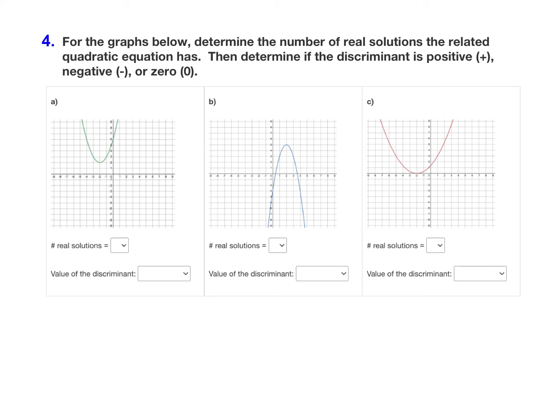For question number four, we're given three graphs, and we want to determine the number of real solutions the related quadratic equation has. Then, determine if the discriminant is positive, negative, or zero.